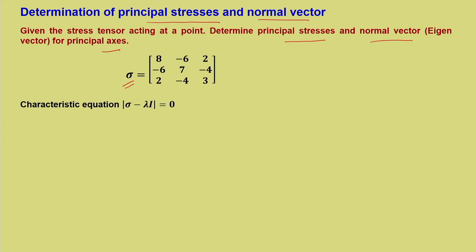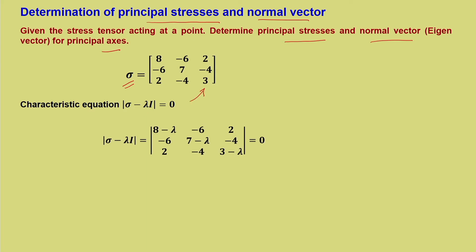We know the characteristic equation is det(sigma minus lambda I) equal to 0, which would diagonalize the given stress matrix. Writing sigma minus lambda I, the diagonal elements become 8 minus lambda, 7 minus lambda, and 3 minus lambda. If you expand this and find the determinant, you will get minus lambda cubed plus 18 lambda squared minus 45 lambda equal to 0, with the last component becoming 0.